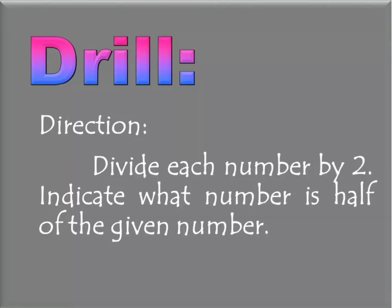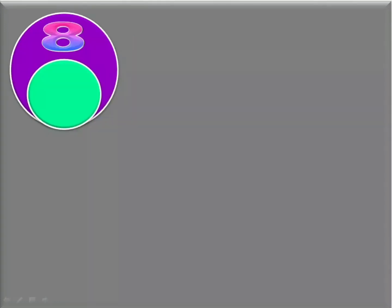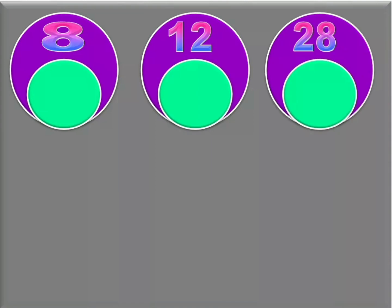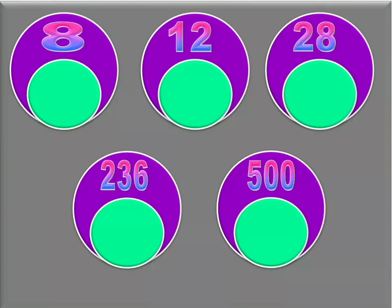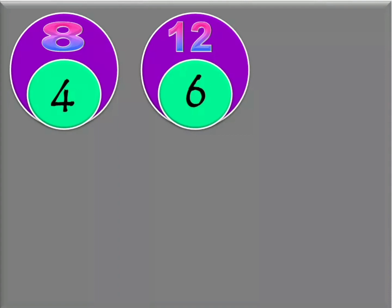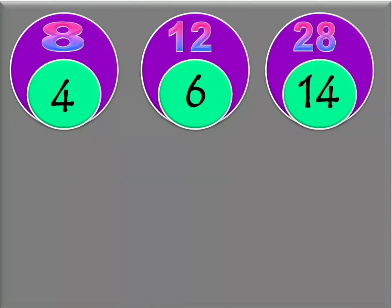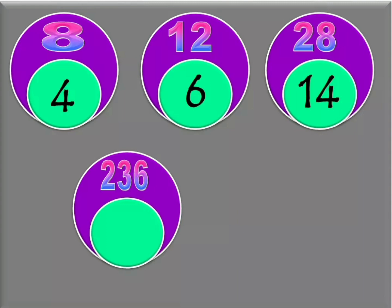For our drill, direction: divide each number by 2 and indicate what number is half of it. Half of 8 is 4. How about 12? Correct, it's 6. How about 28? Yes, it's 14. How about 236? Half of 200 is 100, half of 36 is 18, so the sum is 118. Half of 236 is 118.